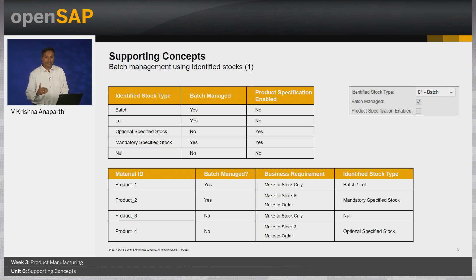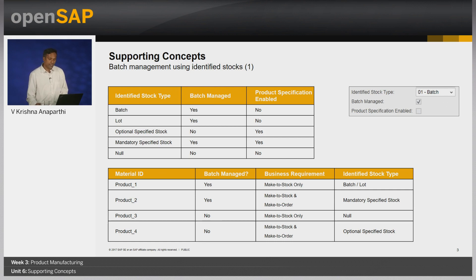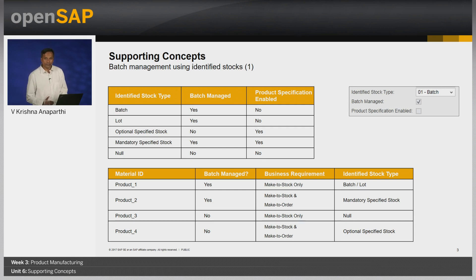If the type is optional specified stock, then it is not batch managed but product specification is enabled. Each identified stock type has a corresponding impact on batch management and product specification enablement. Depending upon the business need, one needs to select the appropriate identified stock type.